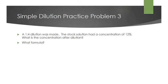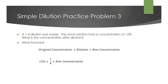For one more simple dilution practice problem: if we make a 1 to 4 dilution with a stock solution that has a concentration of 12%, what is the concentration after dilution? We use the formula: original concentration times dilution equals new concentration. Plugging in: 12% times 1 to 4 equals 3%, so our concentration after dilution is 3%.